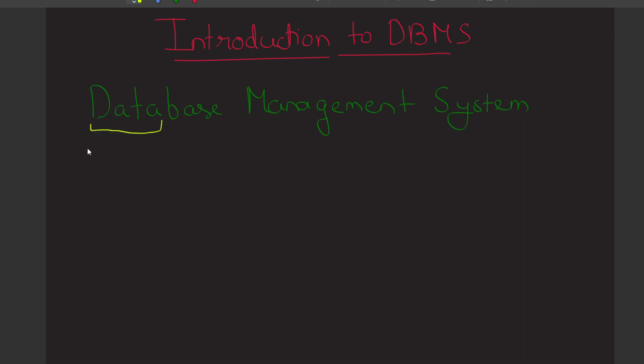Before understanding what is Database Management System, we should first know about what is data and what is database. I have explained what is data in one of my videos in the playlist Data Analysis Using Python, so I will give the link to that video in the description. In brief, data is nothing but the information of a person or an object, and it can be of any type - text, images, videos, etc.